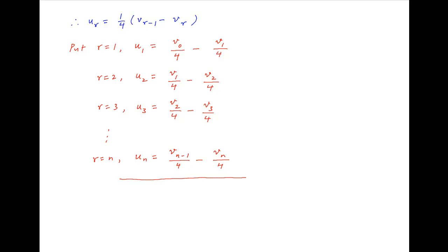Add all of these equations. On the left-hand side we get the sum of n terms of the given series. On the right-hand side, v1/4 in the first equation cancels with v1/4 in the second equation. Similarly, v2/4 in the second equation cancels with v2/4 in the third equation, and so on, till we are left with only two terms. So the right-hand side equals v0/4 minus vn/4.